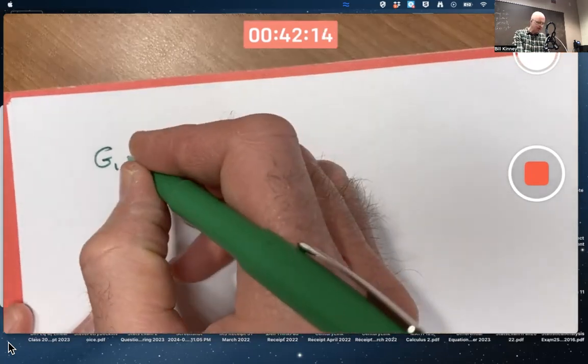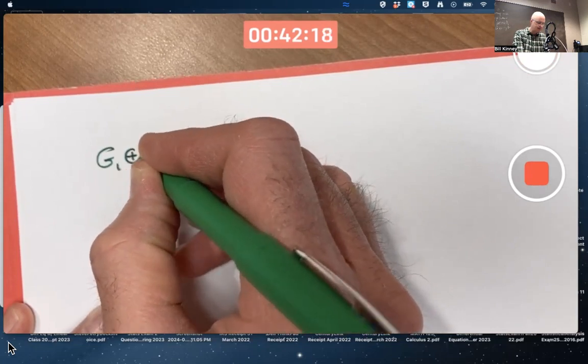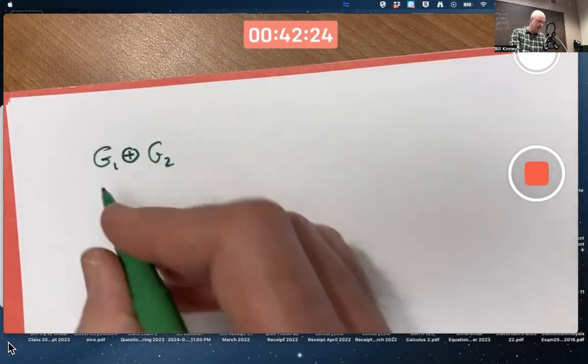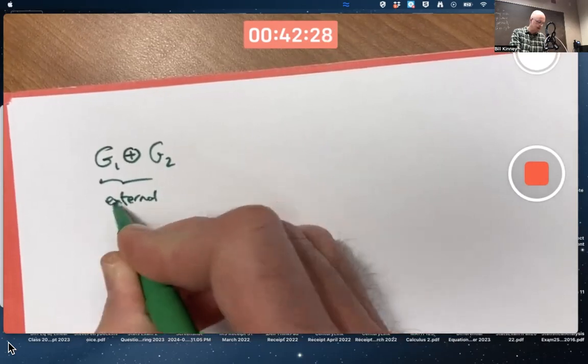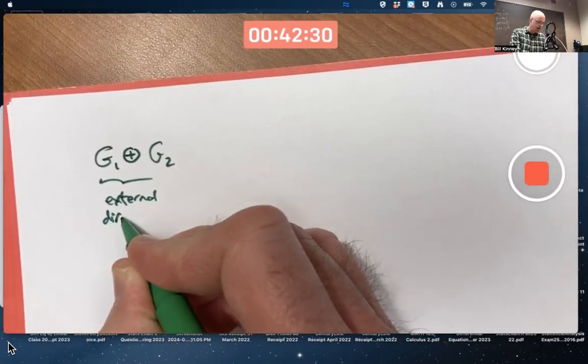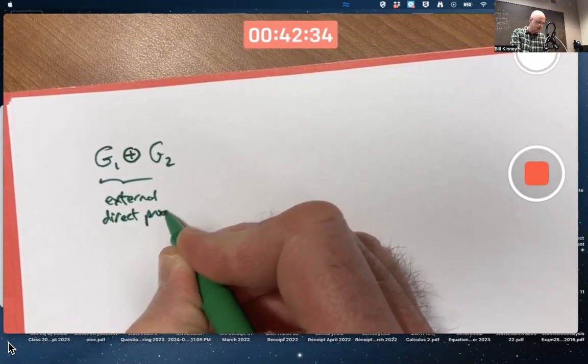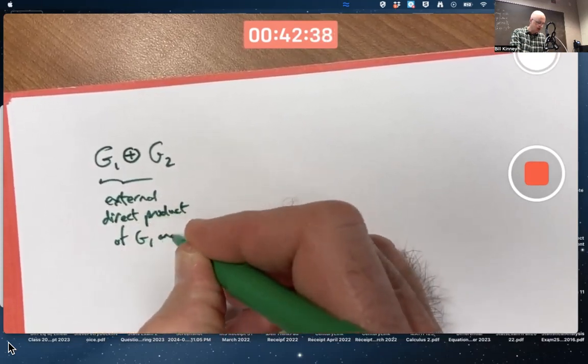Our book uses the following notation for this. They put a plus sign with a circle around it to denote this new group. It's called the external direct product of G1 and G2. Though I will tell you that other books don't use this notation.